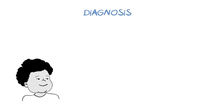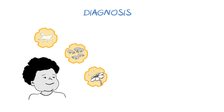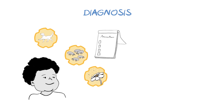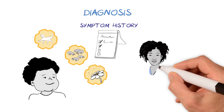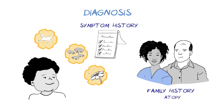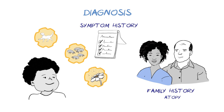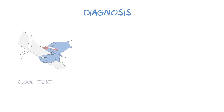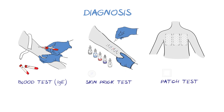How are allergies diagnosed? When and where symptoms occur can provide clues, if these follow exposure to a particular allergen. As well as symptom history, family history is also relevant, as some families have a genetic tendency to develop allergic diseases called atopy. Allergy testing is also sometimes used to investigate further or confirm an allergy. These include blood tests for total and specific IgE antibodies, and skin prick or patch testing, where tiny amounts of different allergens are introduced to the skin in a safe way to see if the skin reacts.